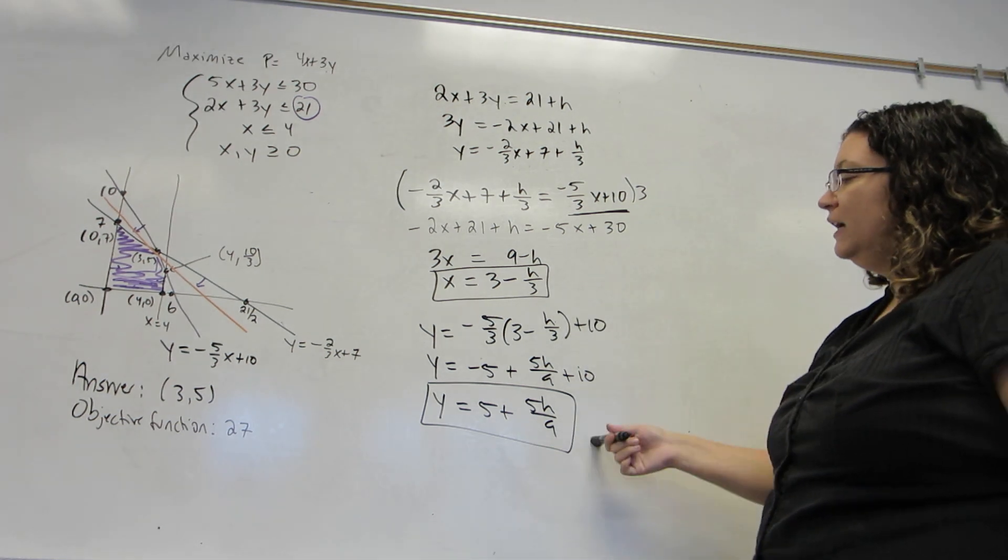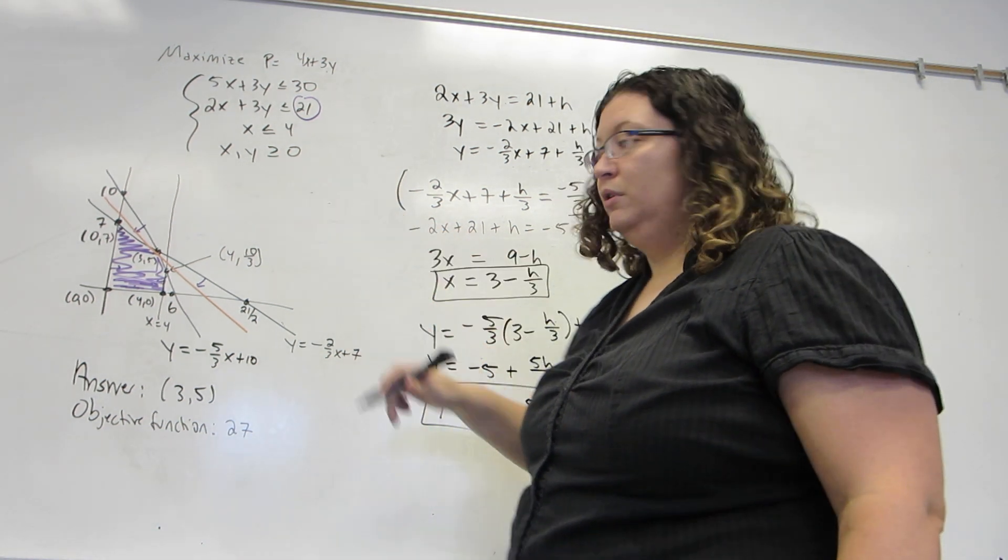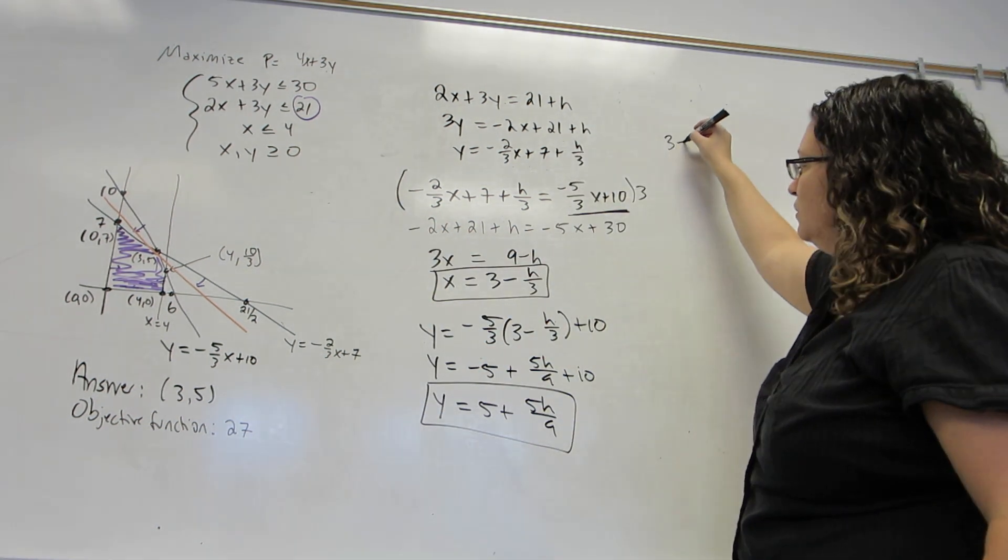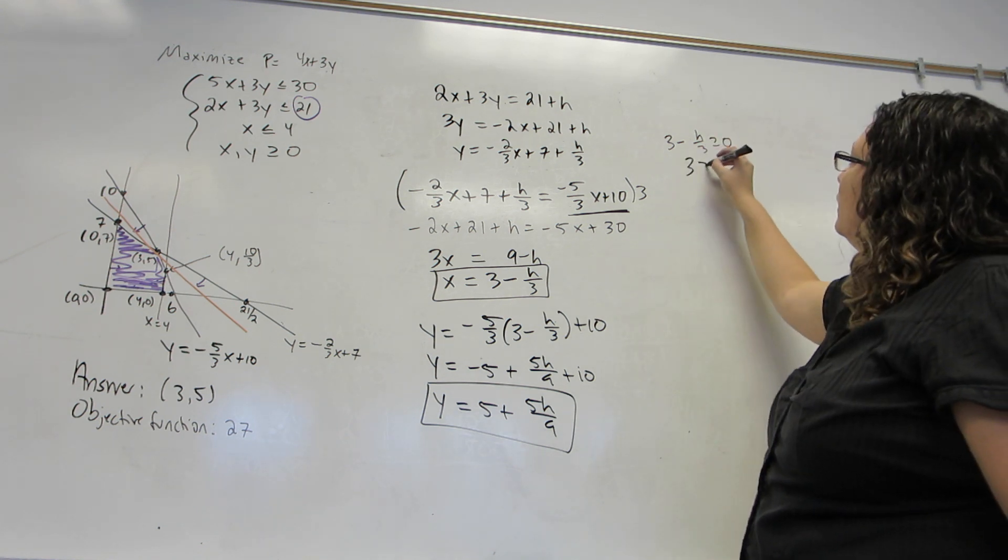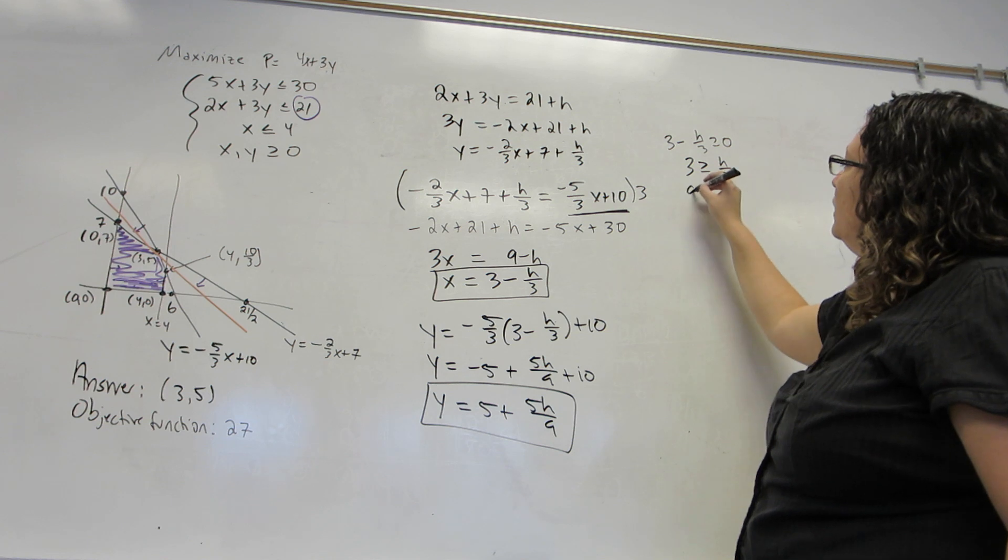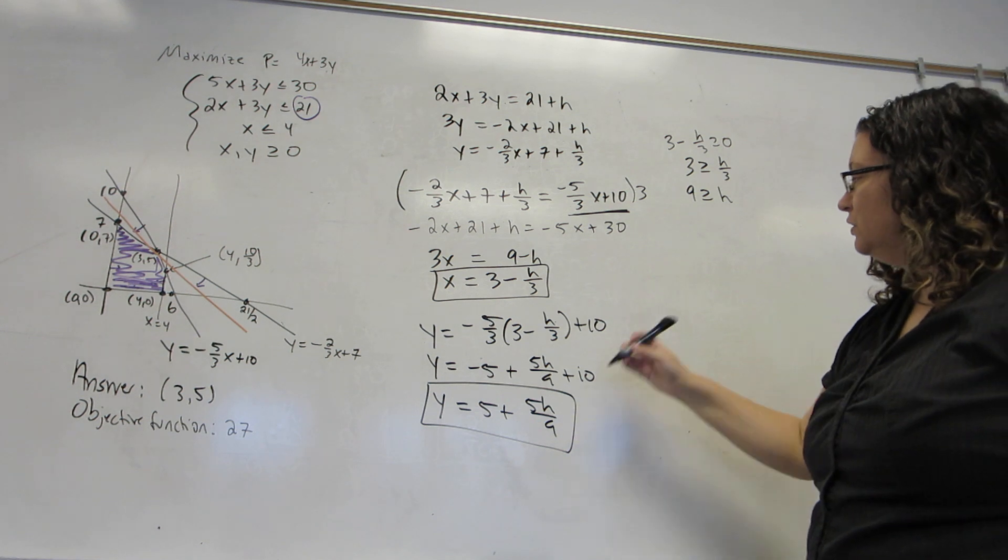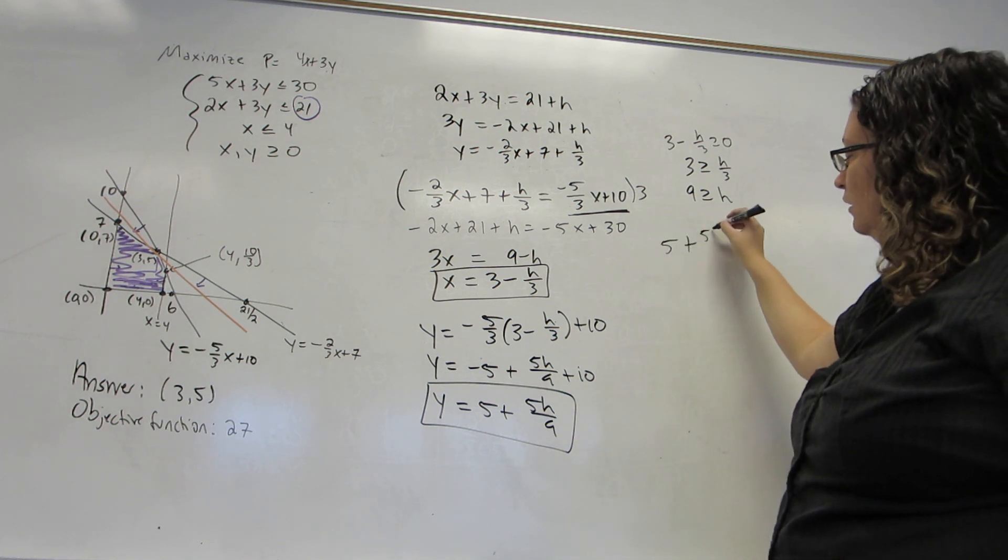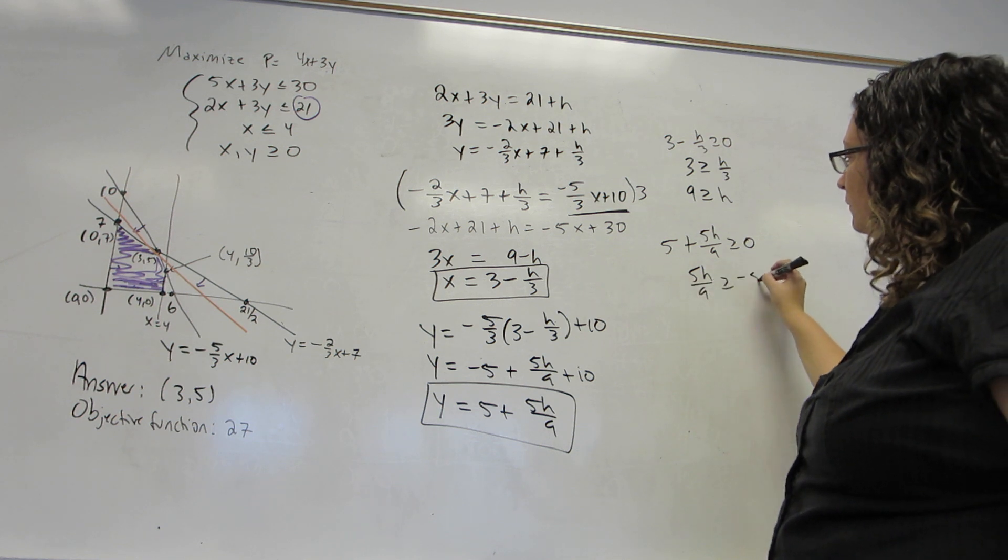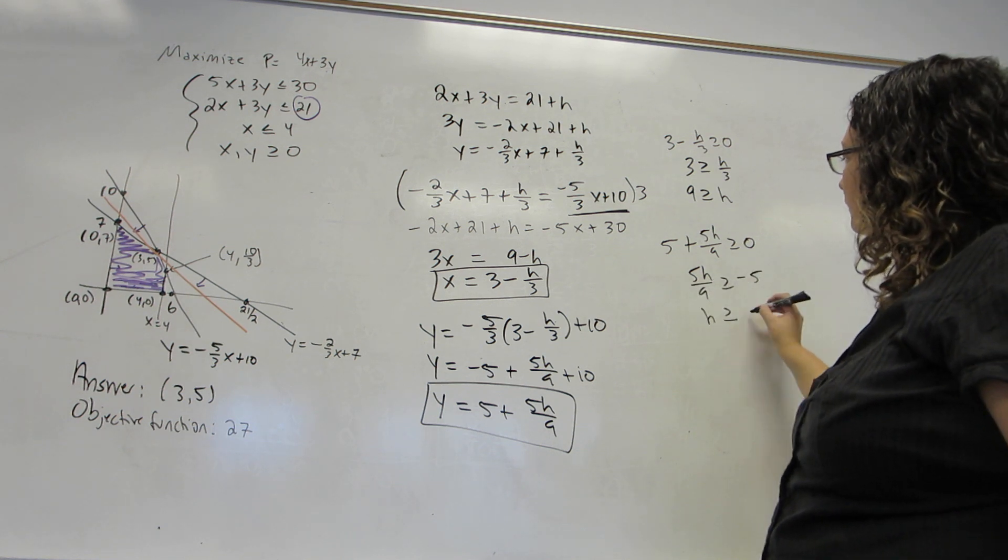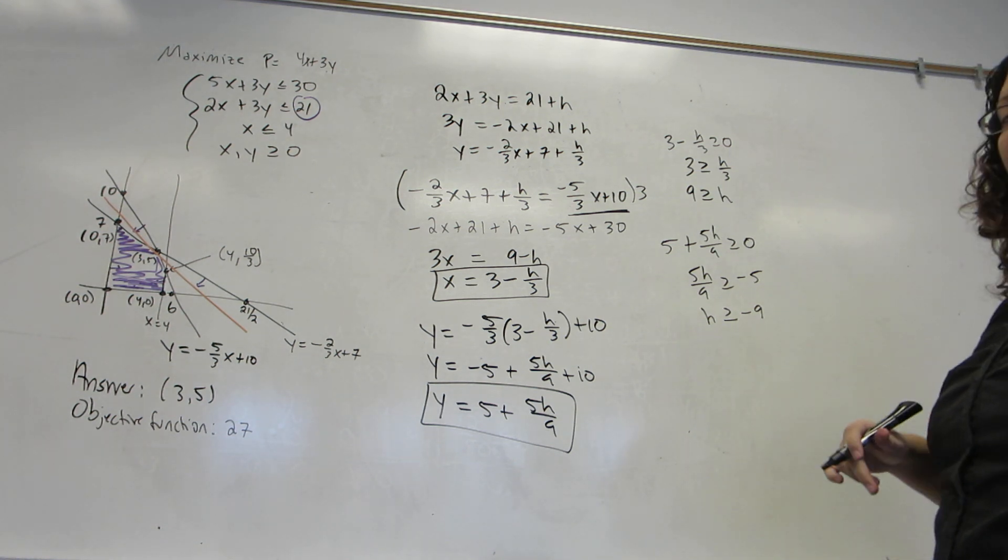So, I'm going to take these two values of X and Y and apply the non-negativity conditions to them. So, X, which is 3 minus H over 3, must be greater than or equal to 0. And this gives me an inequality that says that H must be less than or equal to 9. I also have that Y must be greater than or equal to 0. And this gives me an inequality that H must be greater than or equal to negative 9.